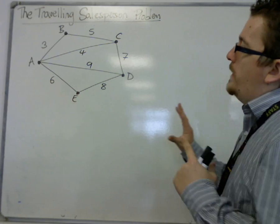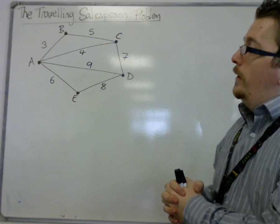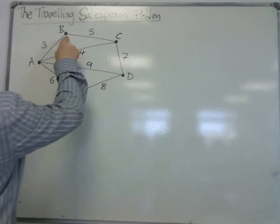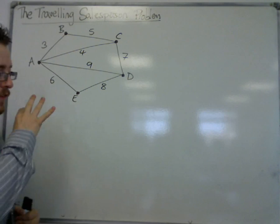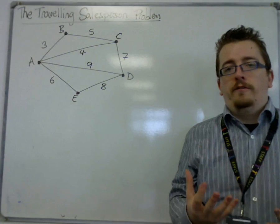For example, this graph, this network rather, is not complete because B is not directly attached to E. So this is not a complete graph and we need to make this graph complete.